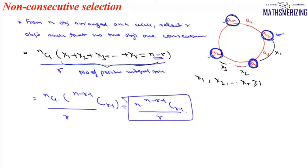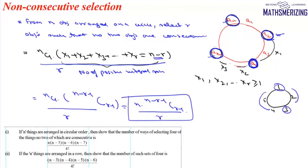Selecting r non-consecutive objects in a row is distinctly different from selecting r non-consecutive objects on a circle. Now we take this question: if n things are arranged in a circle, show that the number of ways of selecting four of these things such that no two are consecutive is n(n-5)(n-6)(n-7) / 4!. The formula for selecting r objects so that no two are consecutive is n × (n-r-1)C(r-1) / r.